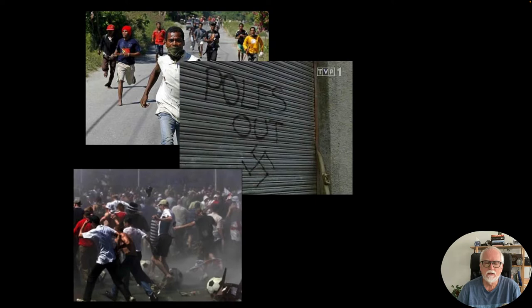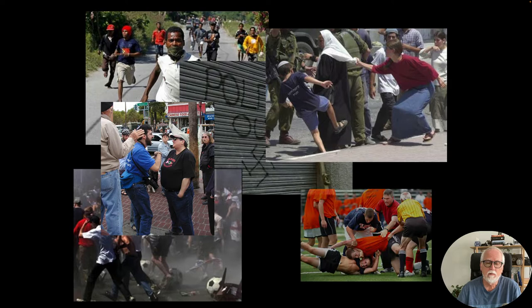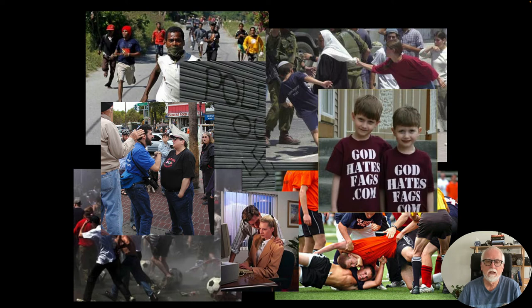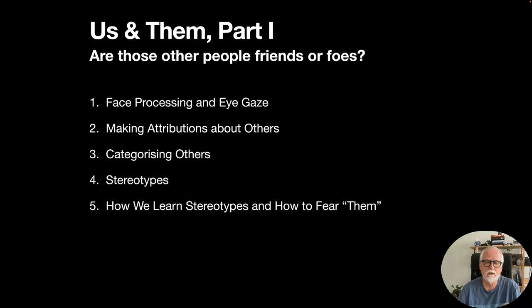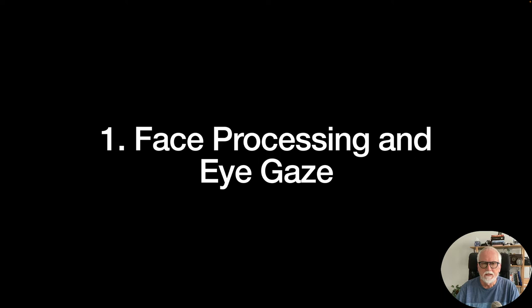These two lectures — Lecture 17 and 18 — correspond to Chapter 11 in Sapolsky's 'Behave.' This topic of us and them is really full of violent actions, discrimination, and can involve simple words we say to each other. It's a big social problem in terms of what humans do to others. I'm going to start out this lecture with some basic processes: face processing and eye gaze, then categorization of people into in and out groups, attributions about others' behaviors, stereotypes, and how we learn stereotypes and fears about people.